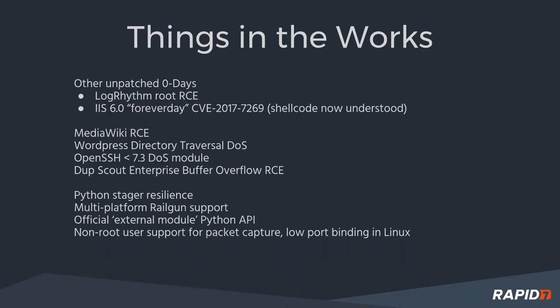We've also got another couple of unpatched zero-days in the works in the pull request queue. LogRhythm is currently vulnerable to a remote root RCE in their appliance, which we are looking at right now. Also, IIS 6.0 on Windows 2003 — there was a forever-day that was pushed out as a module, which was part of some recent leaks. We did a lot of analysis of the shellcode included in the module and have a good understanding of how it works with the exploit technique itself, so we should be able to land that soon.